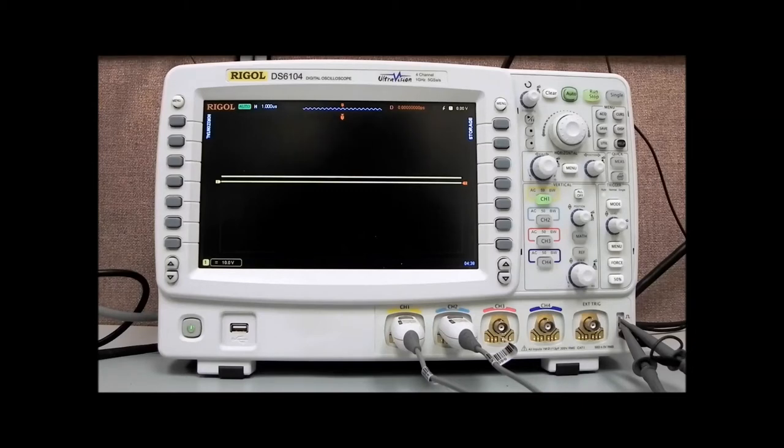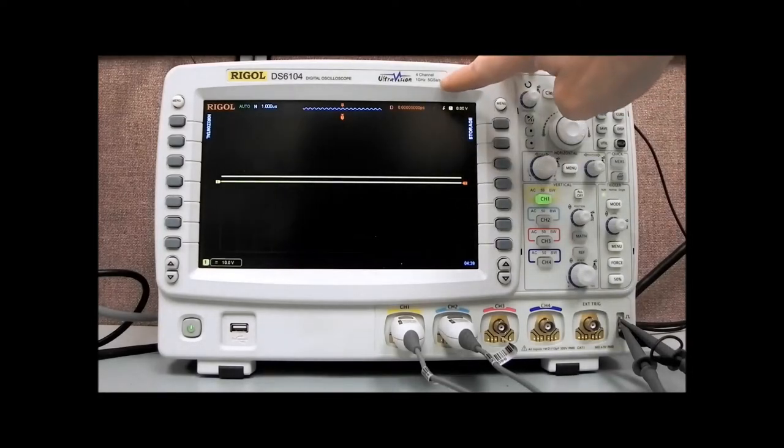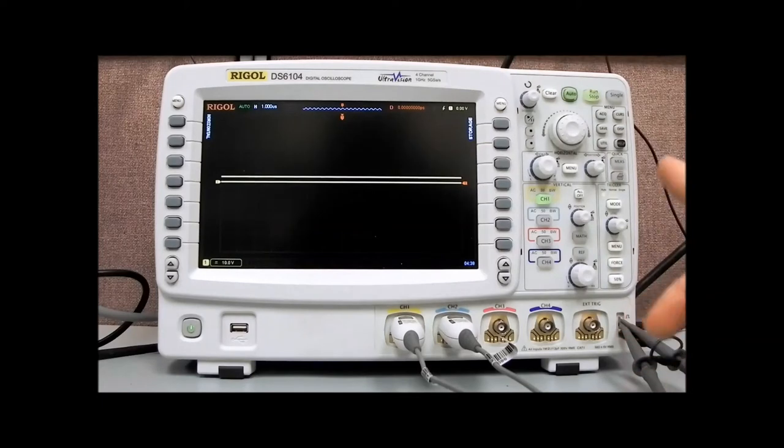This particular model that we have in front of us is the DS6104. The 6104 is a 1 gigahertz scope capable of 5 gigasamples per second sample rate, and it has four channels. The 6104 denotes the 1 gigahertz, and 4 denotes the number of channels that we have available to us.